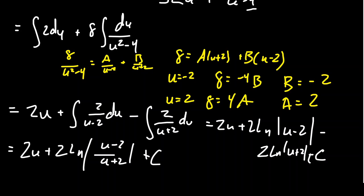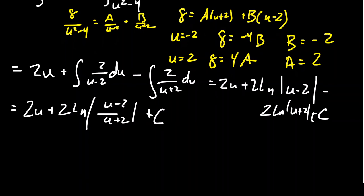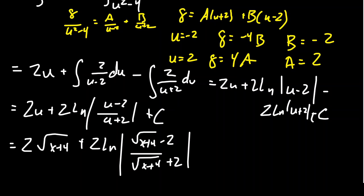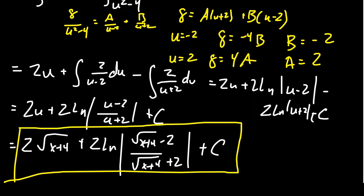Now we back-substitute u = √(x+4). We get 2√(x+4) + 2 ln| (√(x+4) − 2) / (√(x+4) + 2) | + C. And so we've found the antiderivative using a rationalizing substitution followed by partial fraction decomposition — it works out quite nicely.